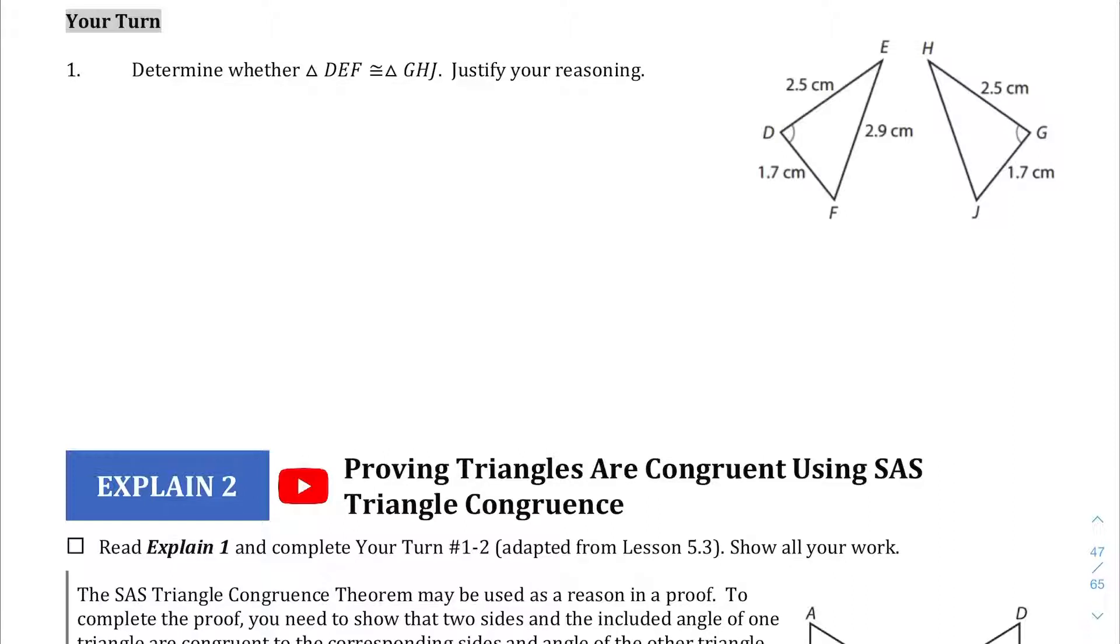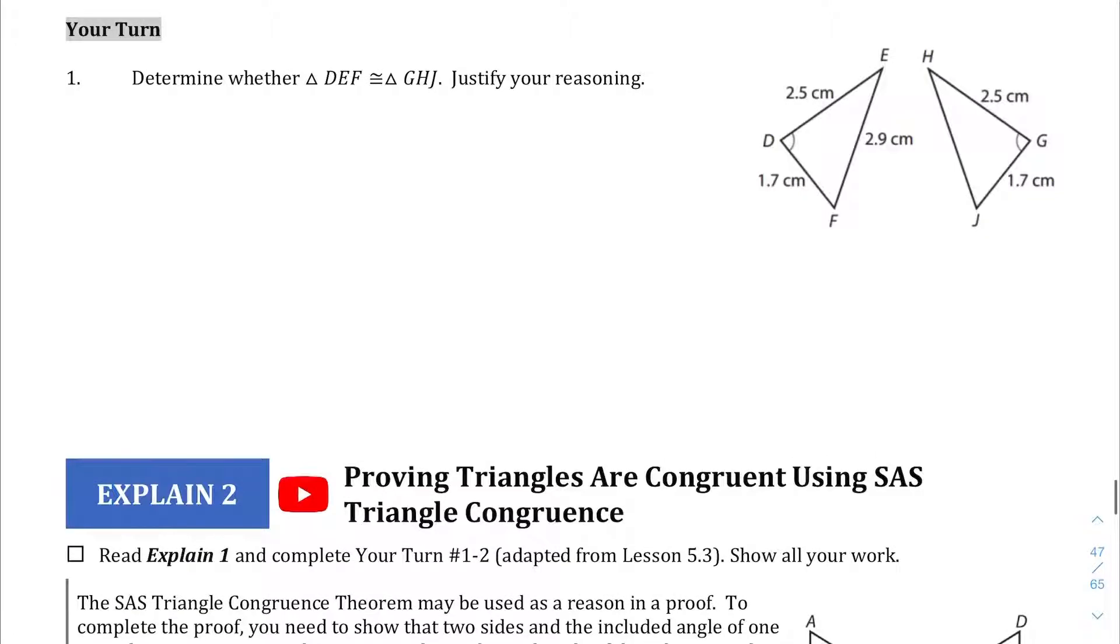So let's see here. We can see that triangle DEF and triangle GHJ have very similar parts. We have side DE which is both 2.5 centimeters. So we can conclude that DE is congruent to HG because of the sides. And then we also have angle D here. We have an angle. Angle D is congruent to angle G here on this side.